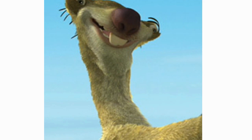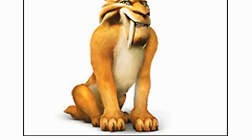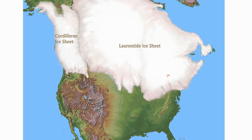You guys remember the movie Ice Age with Sid Sloth and Diego and Manny the Moody Mammoth? Well, at the time of the Ice Age, that X represents where New York State is. This area was completely covered with a mile thick of ice, even thicker if we head north into what is now Canada. The ice was up to two miles thick in those areas, and that put a lot of stress on the land.